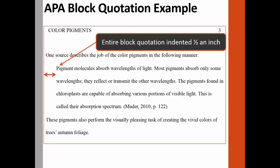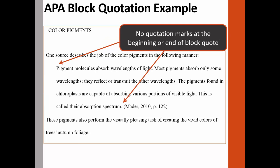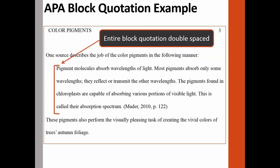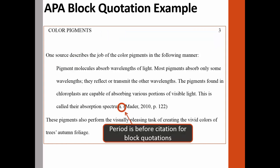Here is an example of a block quotation. Notice that the entire quotation is indented one half inch from the left margin. Because of the indentation, there is no need to add quotation marks, because your reader will know that the information is borrowed. Also notice that the block quotation is double-spaced like the rest of the text in the paper. Lastly, the parenthetical citation is placed after the final punctuation — however, this only occurs when citing block quotations. All other in-text citations will be placed before the final punctuation.